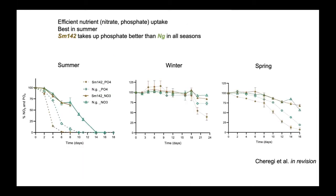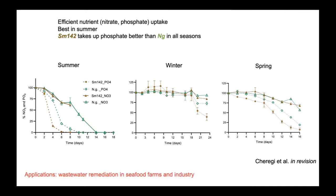Otilia and the RISE team also looked at how much nutrient the strains take from the media, examining nitrate and phosphate across the three seasons. Overall, the best nutrient uptake was in summer, correlating with better growth. Notably, the Skeletonema strain took up phosphate much better in all conditions, suggesting potential applications for both species in bioremediation of saltwater wastewater from seafood farms and industry.